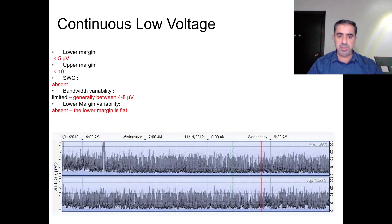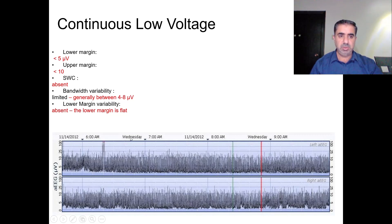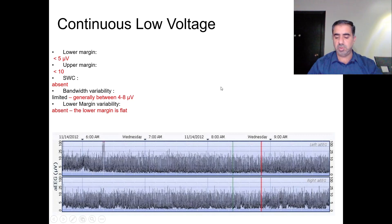Now the continuous low voltage tracing. The lower margin is below 5, and the upper margin hardly reaches 10 — most of the time it is below 10 — making this a severely abnormal tracing by definition. The sleep-wake cycle is clearly absent. Bandwidth variability is still limited with no much variability, generally between 4 and 8 microvolts. The lower margin variability is almost absent.